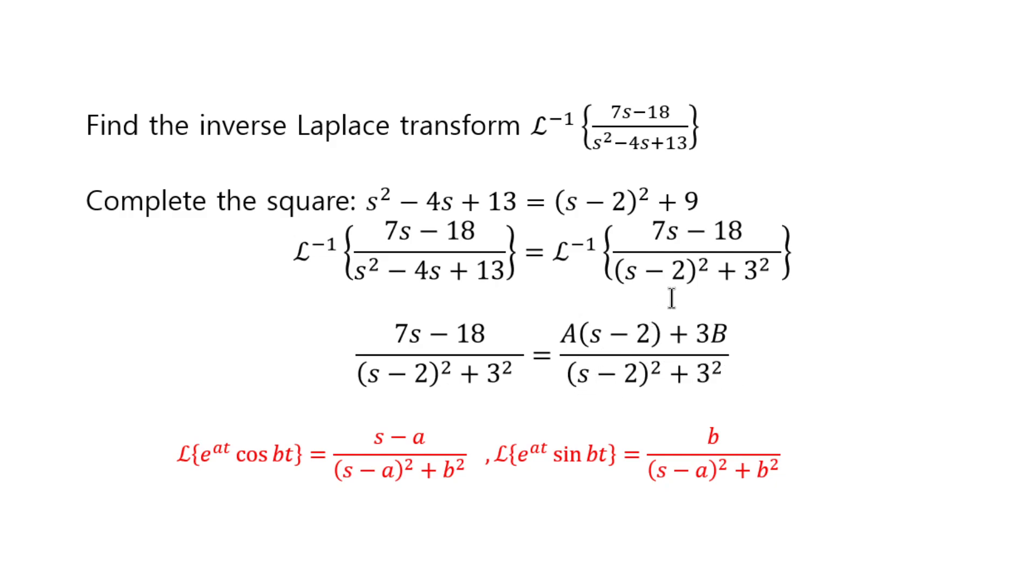In other words, once you do the completing the square, whatever you get here, you put it up here. Whatever you get here, you put it up here. And you get a times s minus 2 and 3 times b.